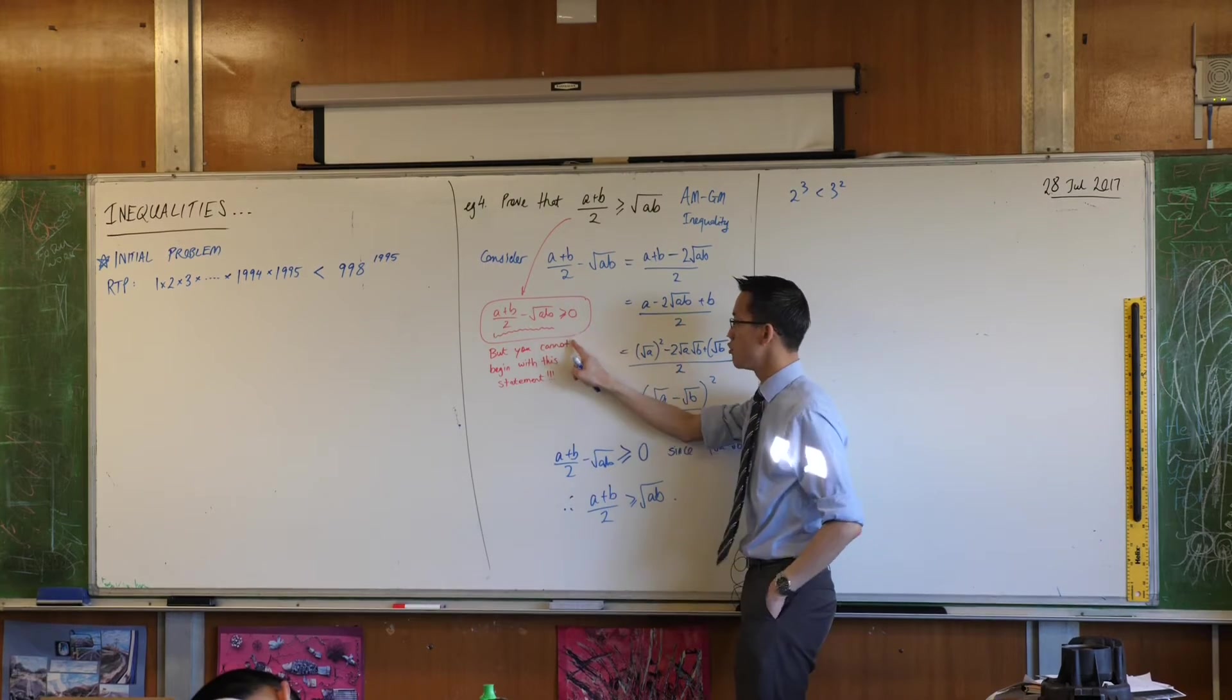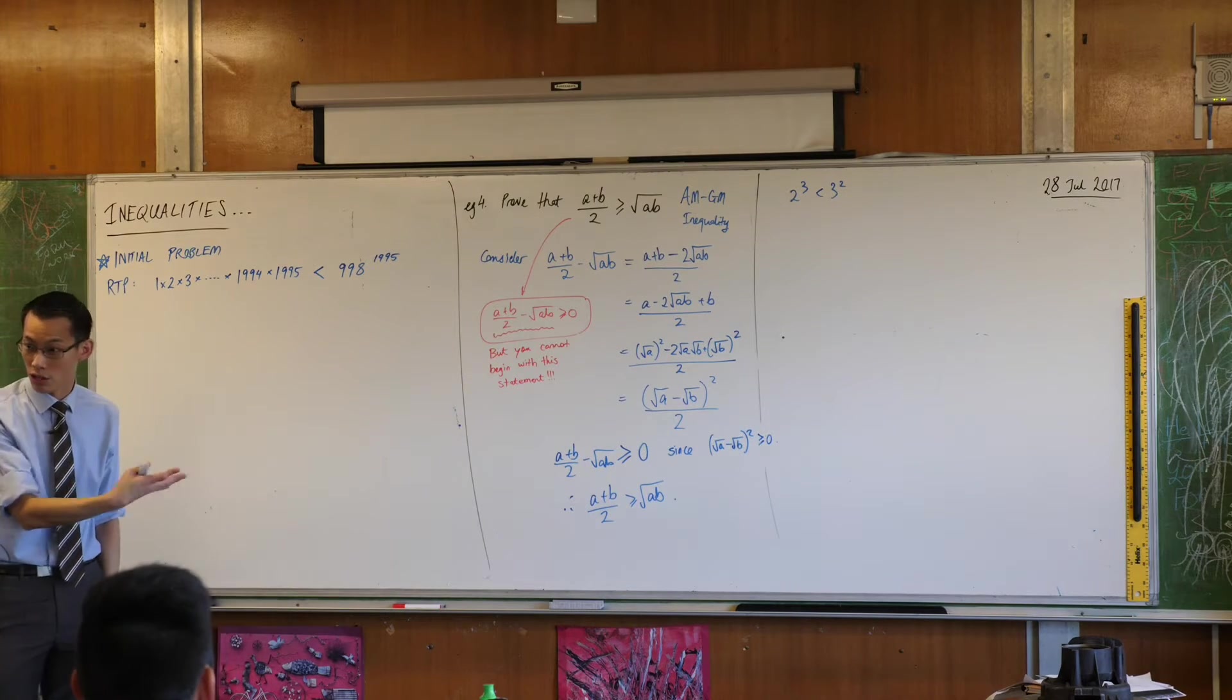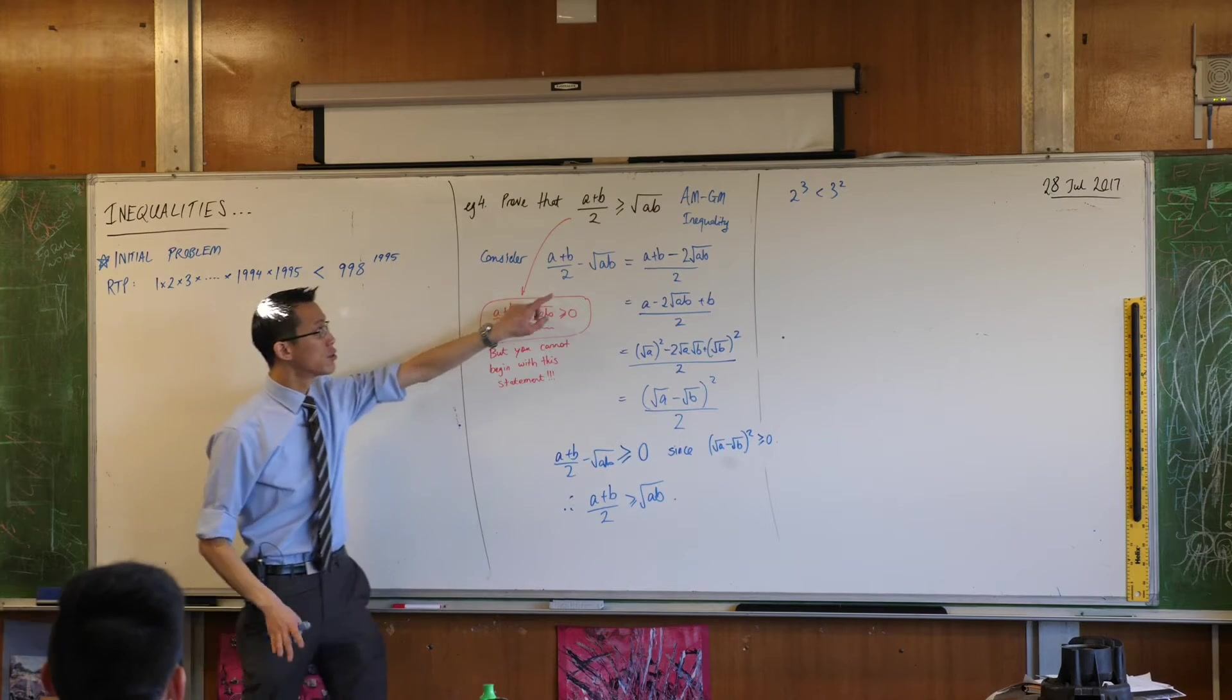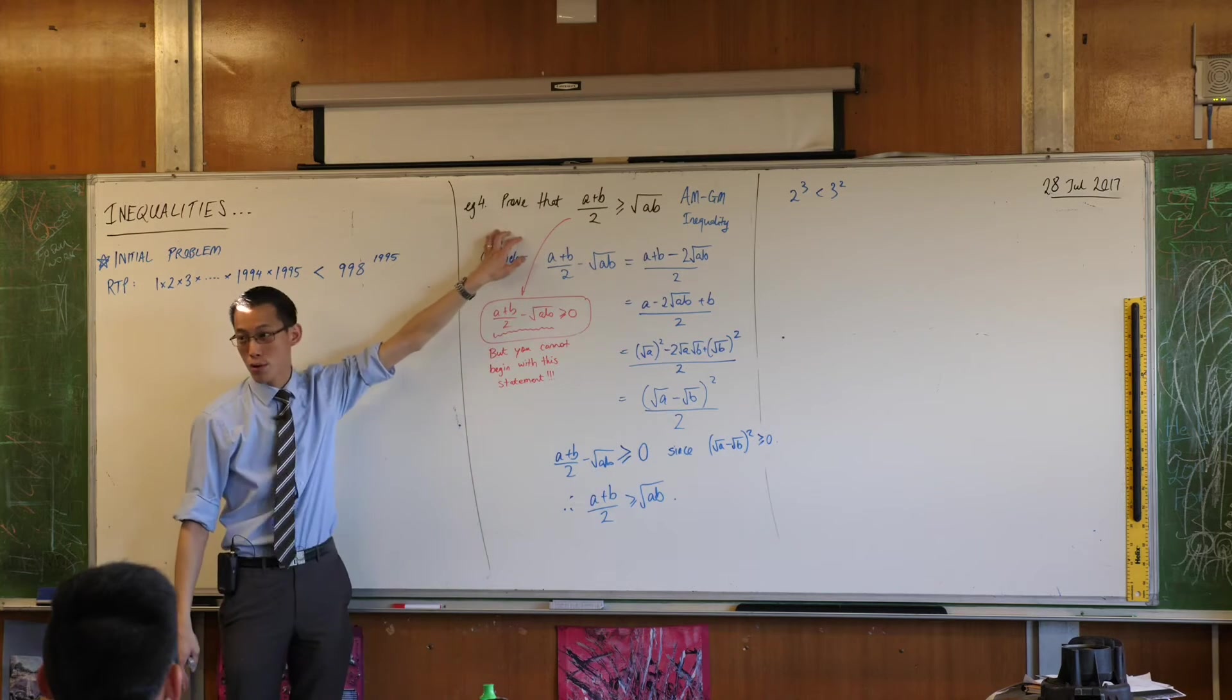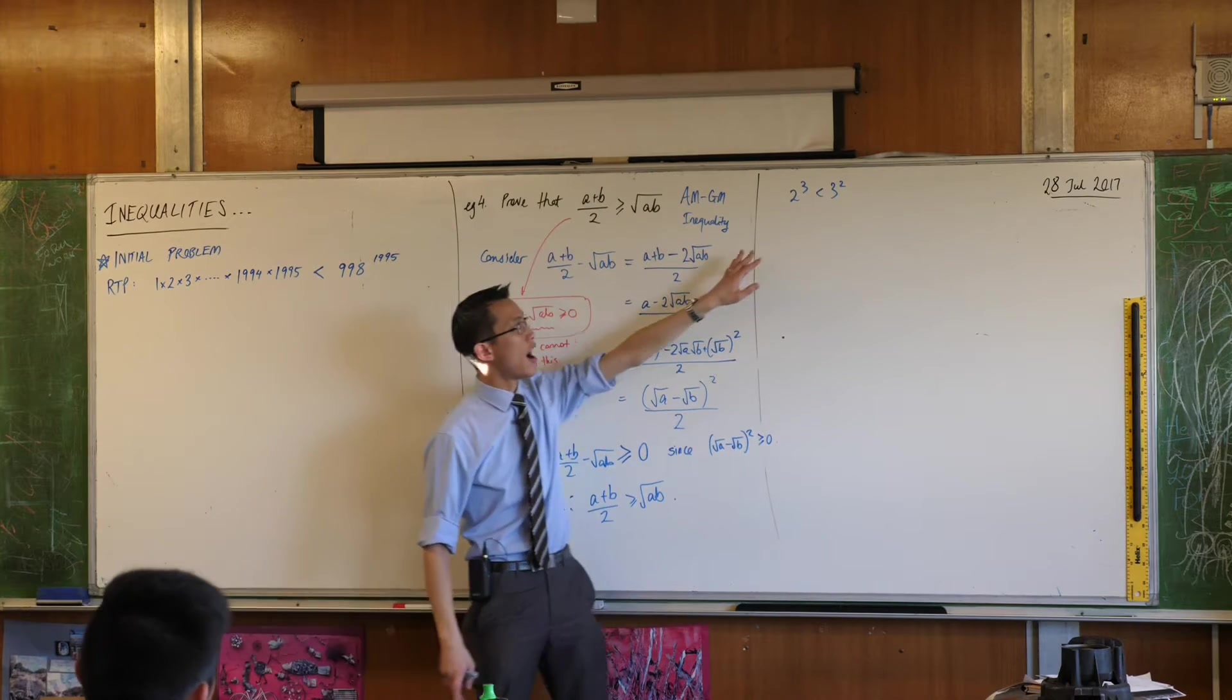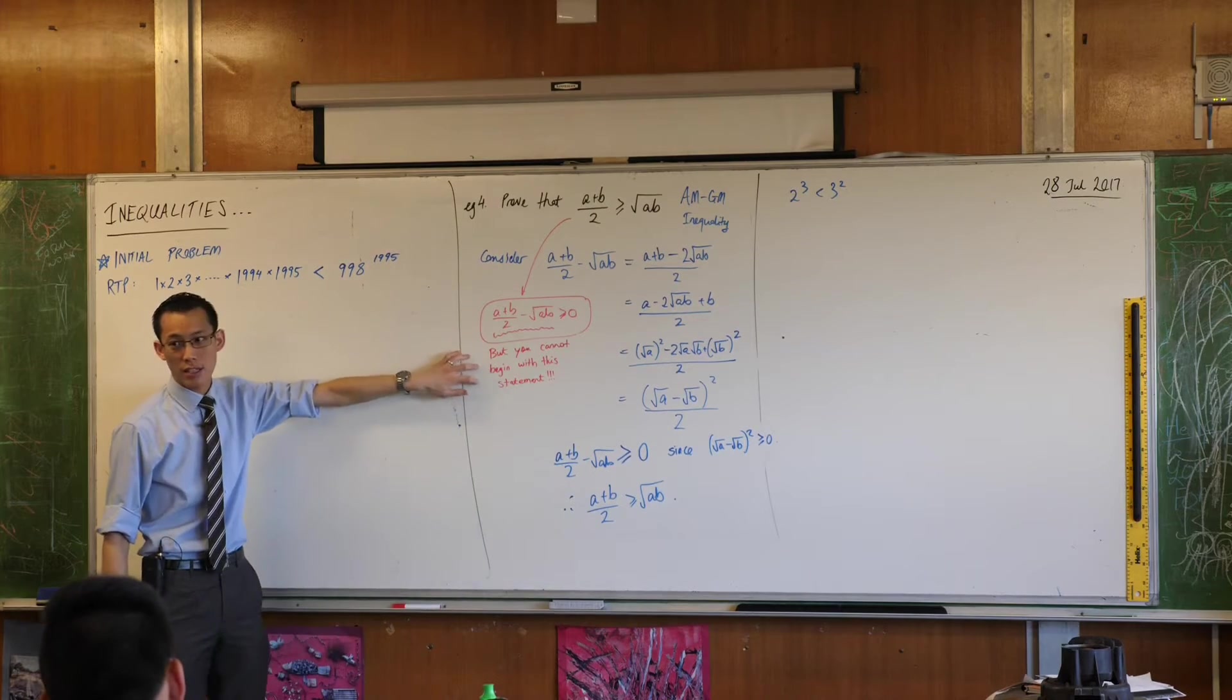Here is why. You cannot begin with this statement, and this is a very common error for people to make because they do not understand the way mathematical deductive logic works. You can't make this statement as your first line of working because you don't know that this is true. That's the point of the question. You're trying to prove that it's true. This is not an established fact that you can apply logic to, unlike this being an established fact which you can apply logic to and then you can get to the answer.